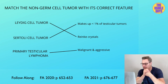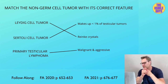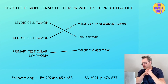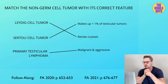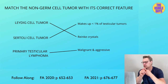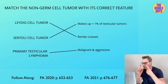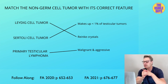Next up is the Sertoli cell tumor. This is a benign tumor that makes up less than 1% of all testicular tumors. It presents with a painless, slow-growing testicular mass. It can be associated with Peutz-Jeghers syndrome, androgen insensitivity syndrome, and testicular feminization syndrome.